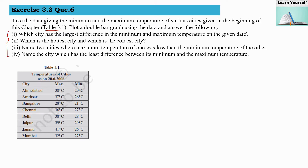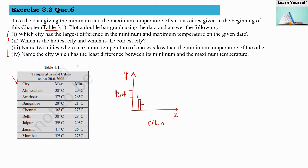This is our table in which these are different cities, and for each city we have maximum and minimum temperature. On the x-axis the cities will come, and on the y-axis the temperature will come. A double bar graph will be used because we are going to mark both maximum temperature and minimum temperature.